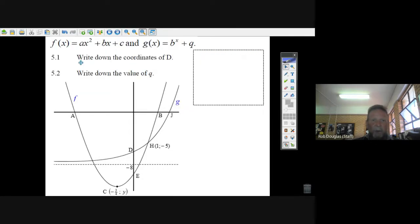Here we go, the first question. Write down the coordinates of d. Well, d is happening with the exponential equation, and d is the y-intercept. Now, we happen to know that q is minus 8, because that's the asymptote.